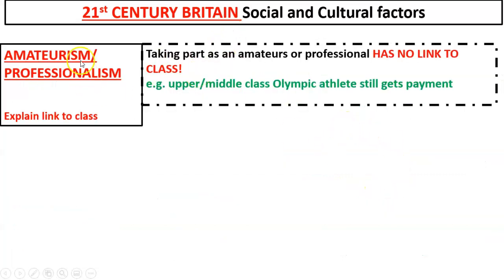Let's look at amateurism and professionalism. In 21st century Britain, when you take part in sport as an amateur or professional, it has no link to class — that's the big change. Amateurs still take part to enjoy; professionals still take part to get paid. But the key thing is there is no class distinction. No class dictates whether you take part as an amateur or professional. Even an upper or middle class person who went to a private school and is an Olympic athlete still gets paid via UK Sport for facilities, equipment, and specialist coaching.